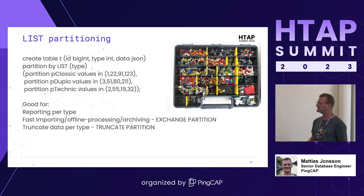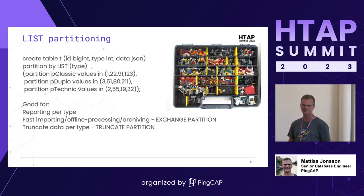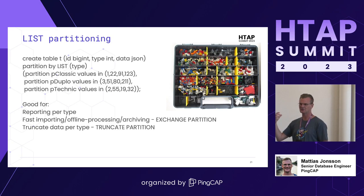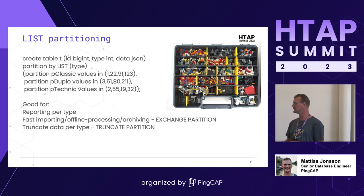List partitioning is slightly less used. Have you seen OSSinsight.io? That's a demo site we have with all of the GitHub events — we even stream new GitHub events there. It's currently more than six billion rows in a single table. There we use list partitioning per event type, so you can easily skip all other events if you're only interested in how many stars a project has, for example. It's very beneficial when doing reporting by type. You can still use it for maintenance, truncate, or drop partition, but those are less useful.